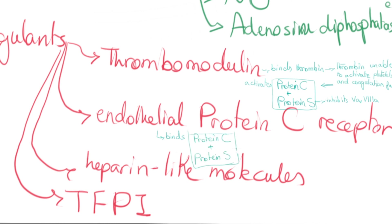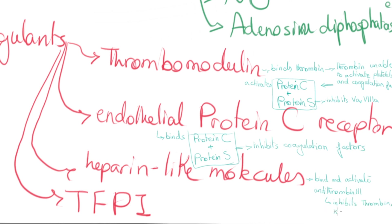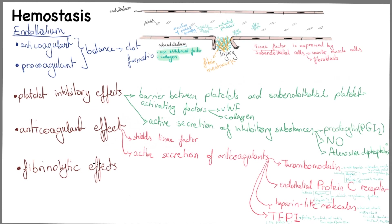Protein C together with protein S forms a complex that inhibits coagulation factors 5a and 8a. Endothelial protein C receptor binds protein C, facilitating this complex. Heparin-like molecules bind and activate antithrombin 3, which inhibits thrombin and factors 9a, 10, 11a, and 12a. TFPI binds and inhibits the tissue factor–factor 7a complex. For fibrinolytic effects, normal endothelium produces tPA, a key component of fibrinolysis, limiting clot formation to the site of injury.